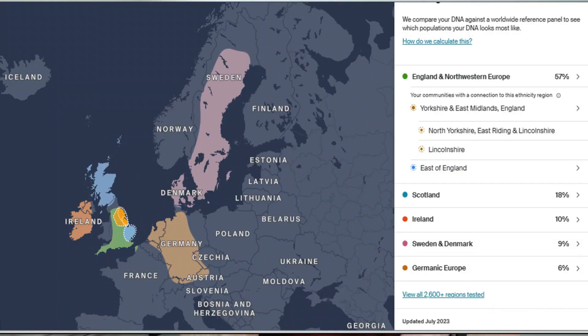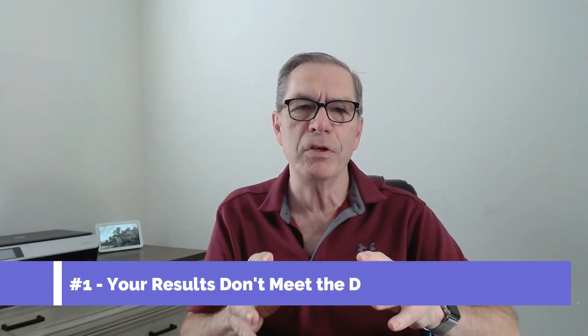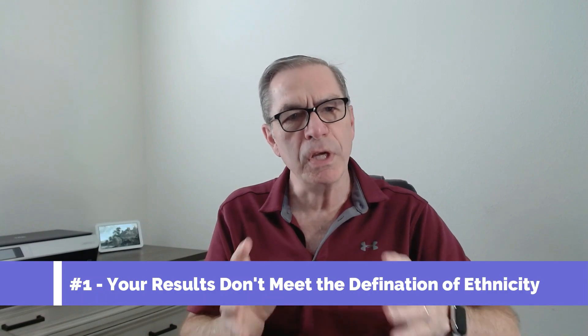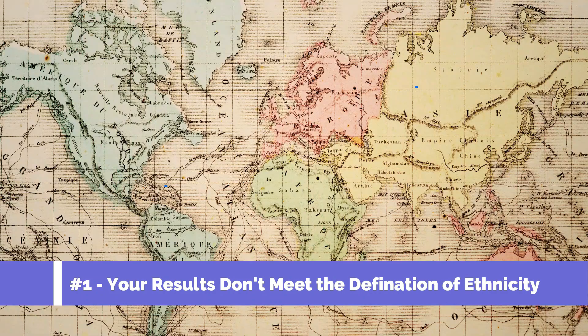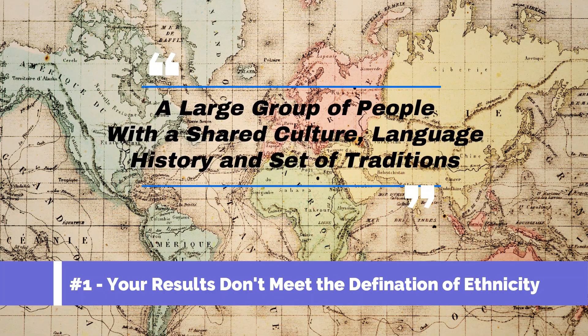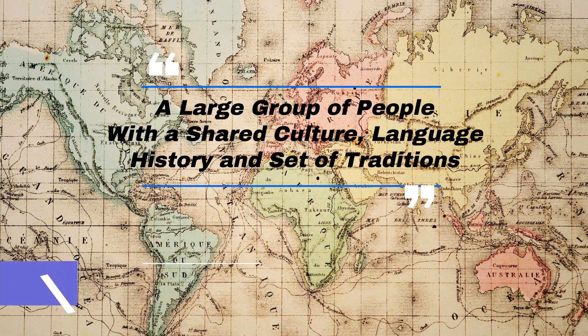This makes up your Ancestry ethnicity estimate — here is mine. It all seems very straightforward, so why are people confused by their results? One reason is that DNA ethnicity does not always meet the common definition of ethnicity, which is a large group of people with a shared culture, shared language, history, and a set of traditions.